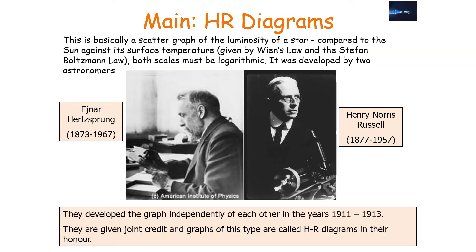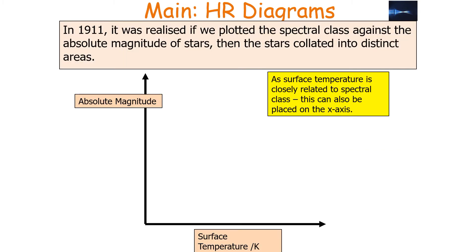This is a scattergraph of the luminosity of a star compared to the sun against its surface temperature, which is worked out by the Wien displacement law and Stefan's law. Now both scales are logarithmic, and it was developed independently by two separate astronomers, Hertzsprung and Russell, in the years 1911 to 1913. They are given joint credit in graphs of this type, called Hertzsprung-Russell diagrams in their honour.